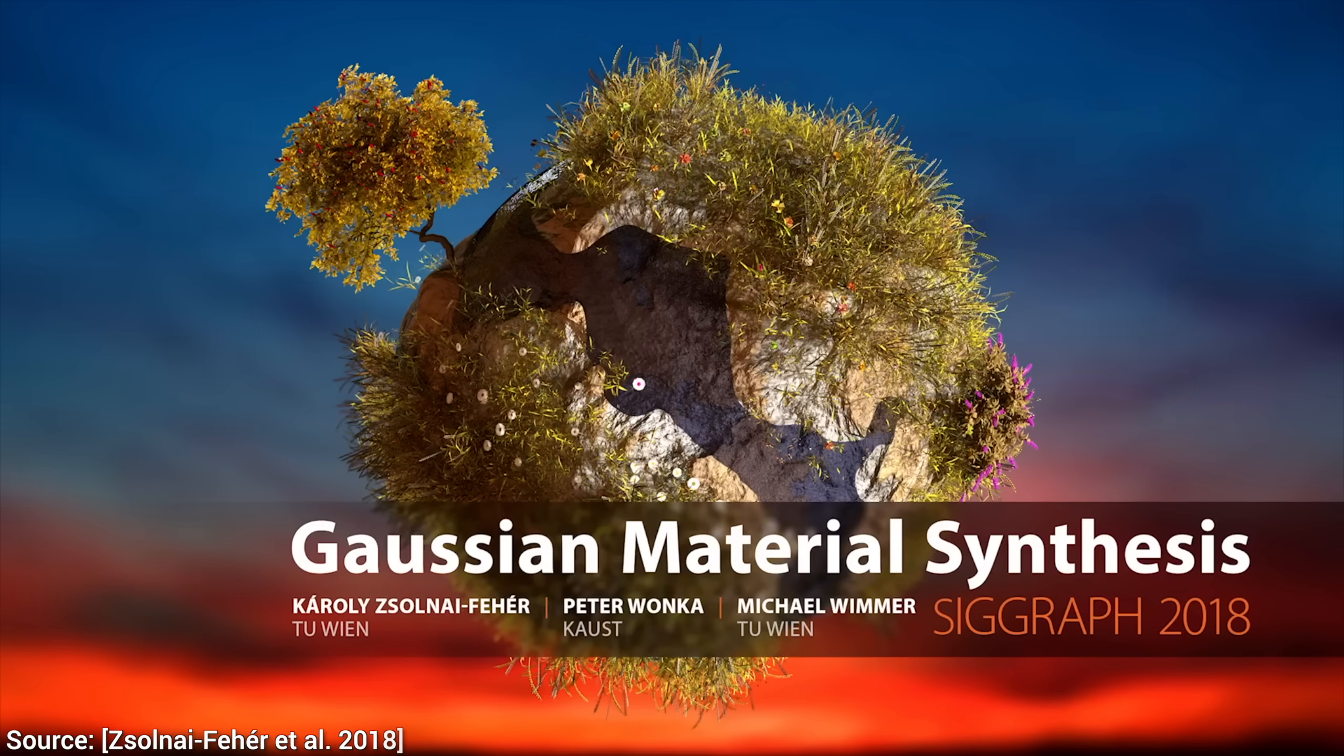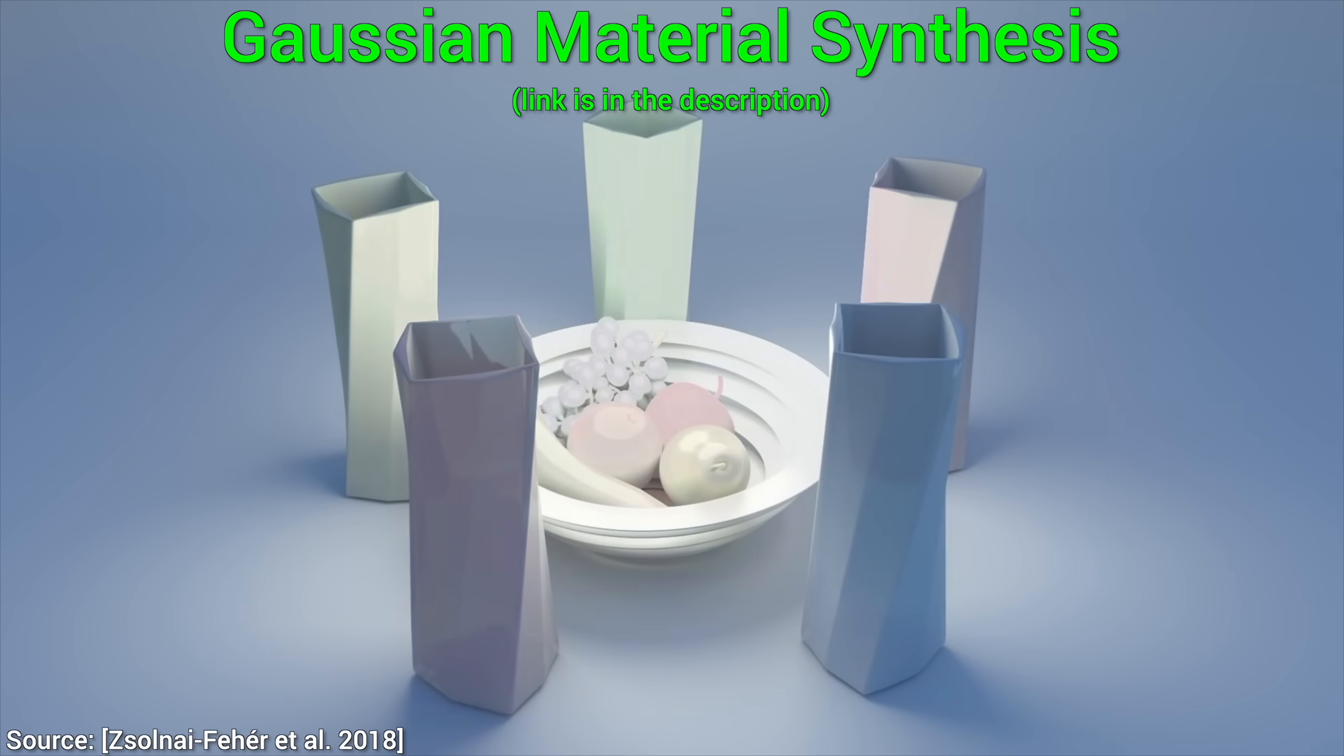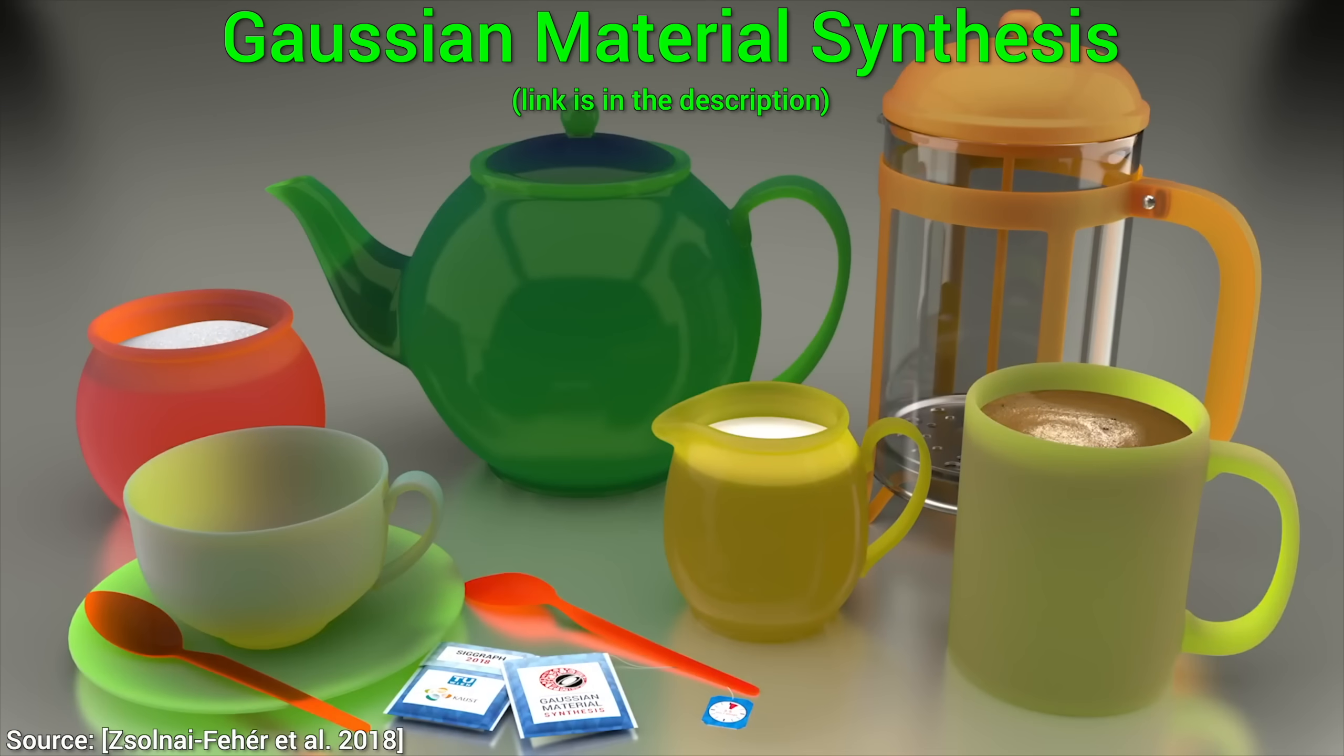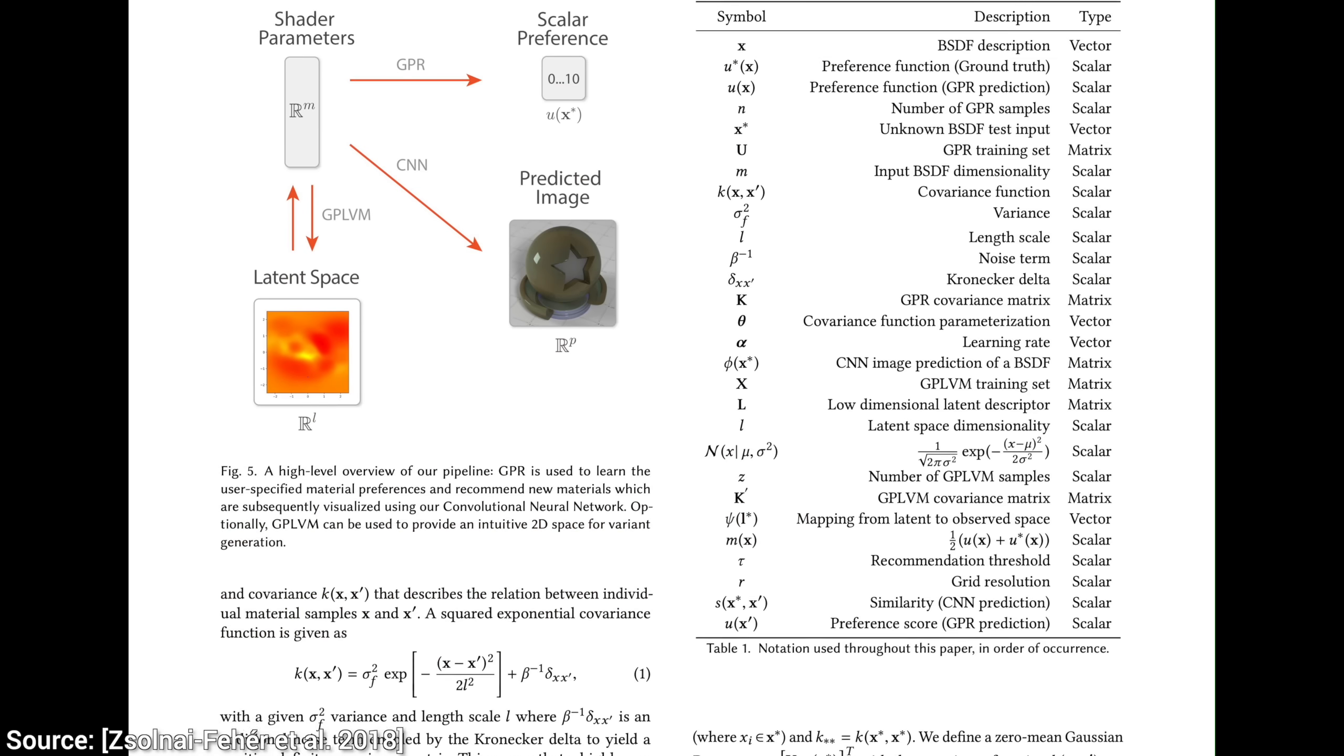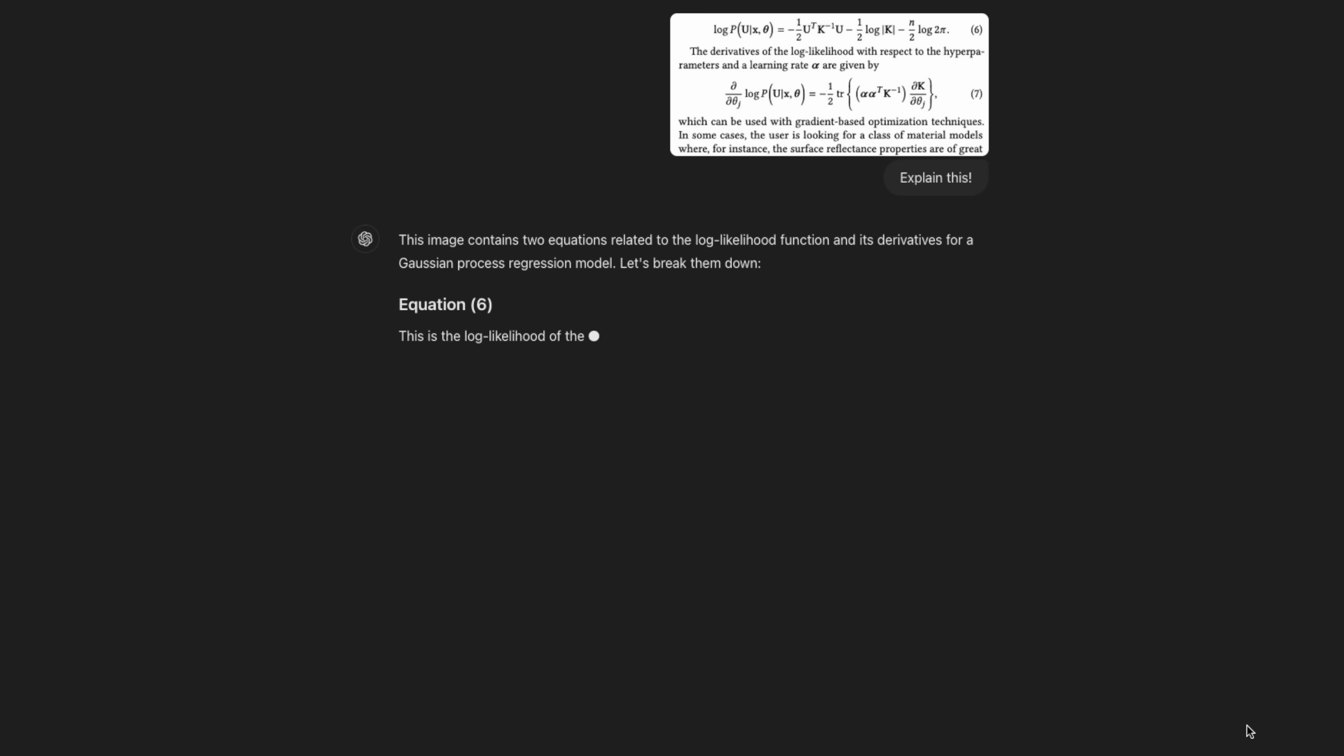This is from one of our earlier papers, called Gaussian Material Synthesis, where we taught an AI to synthesize virtual materials and it is one of the early works in neural rendering, ray tracing with an AI, if you will. Now, if we look into the paper and ask for a little help, we get this.